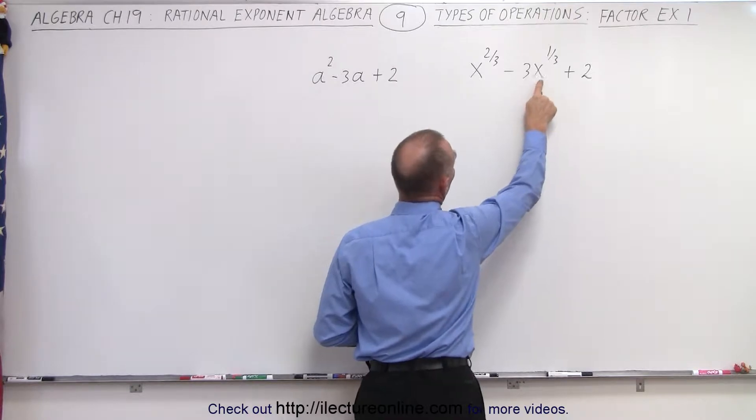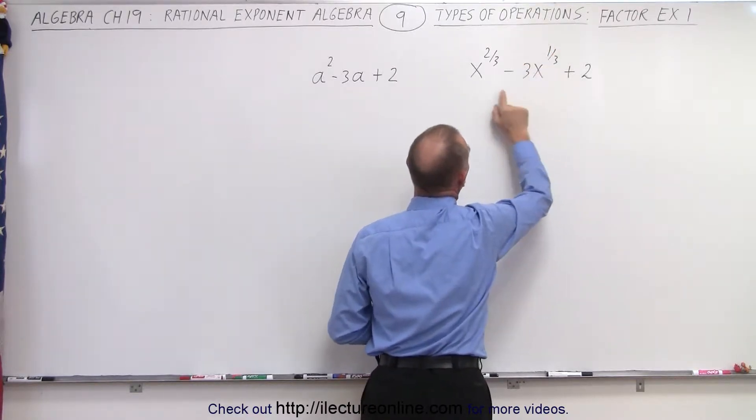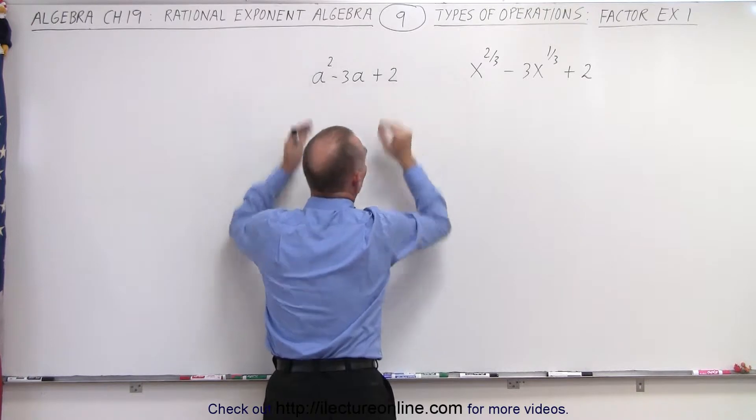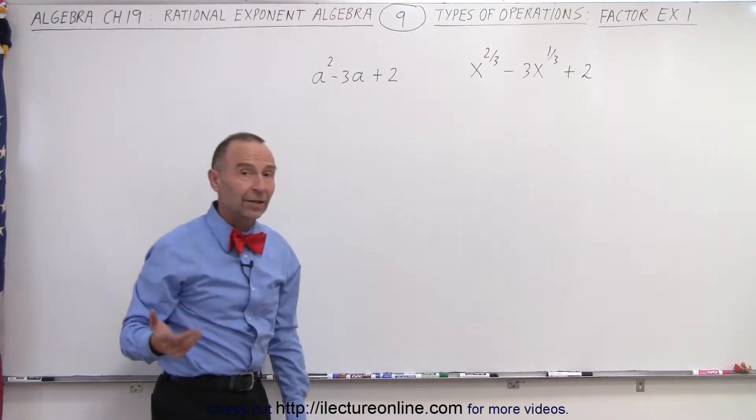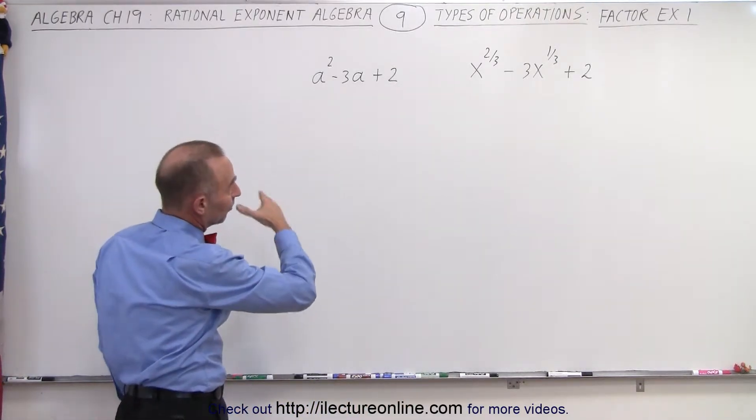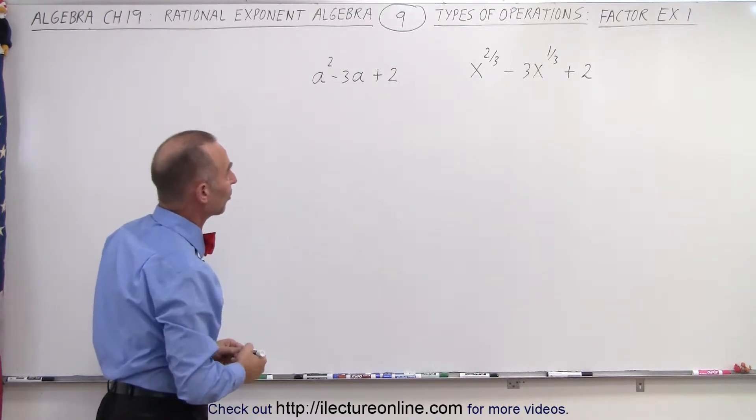And here x to the 1/3, if you get rid of the divide by 3, you simply get something that looks very similar to this. Let's factor what we have on the left and apply that technique to what we have on the right.